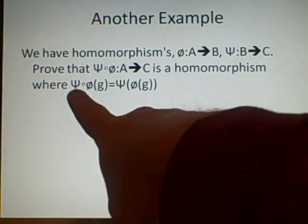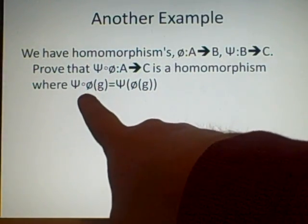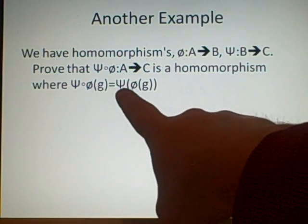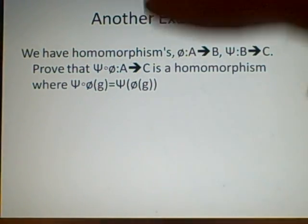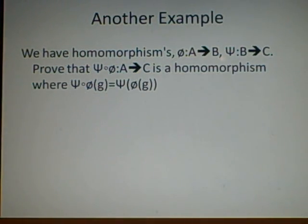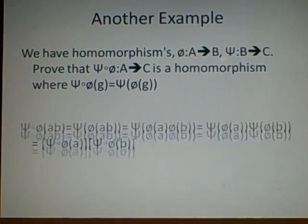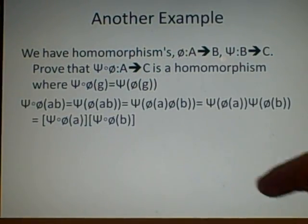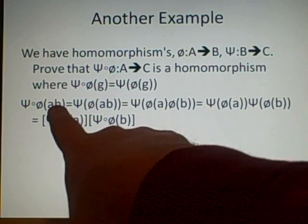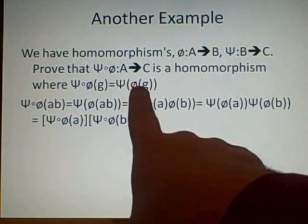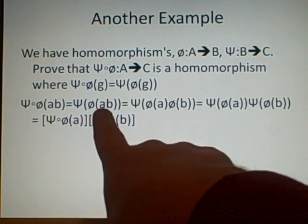So sigma composed with phi of g is sigma of phi g. So again, we have to do multiplication. So again, instead of g, we've put ab, and this can be split up to here, just by following the simple, what they've given us there.